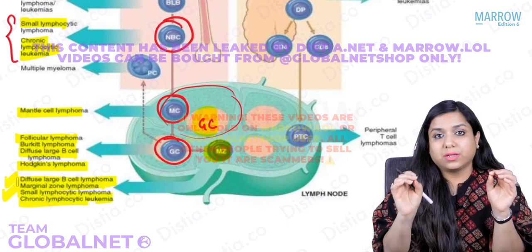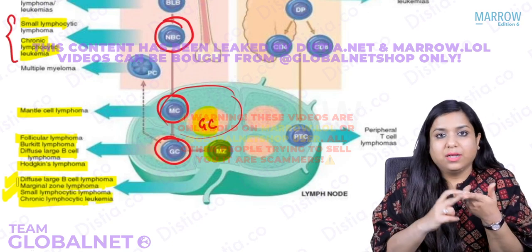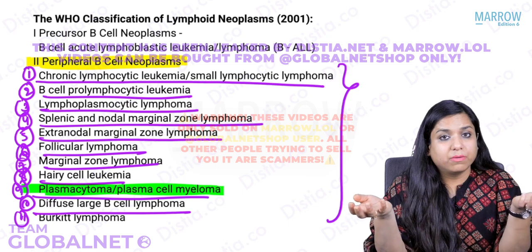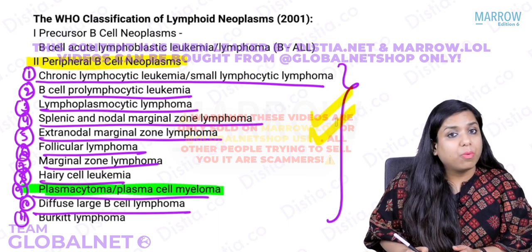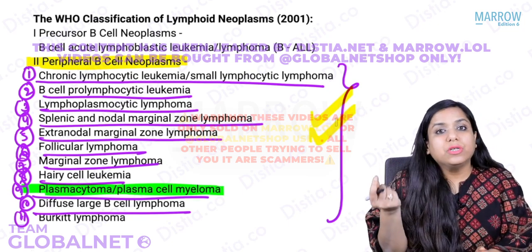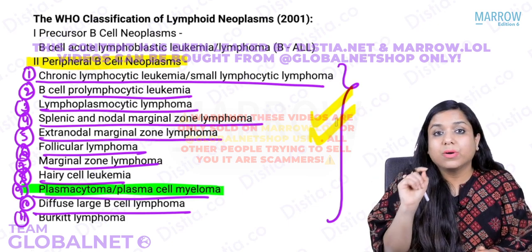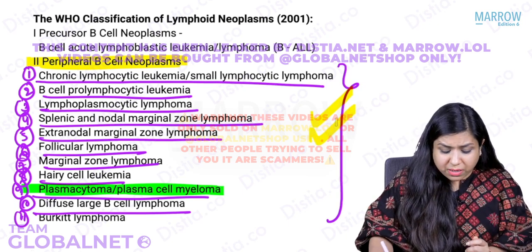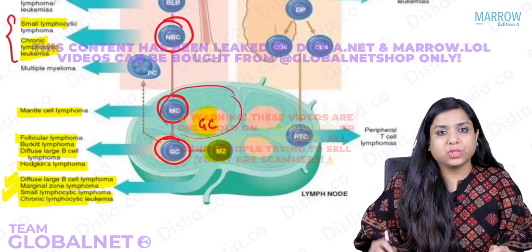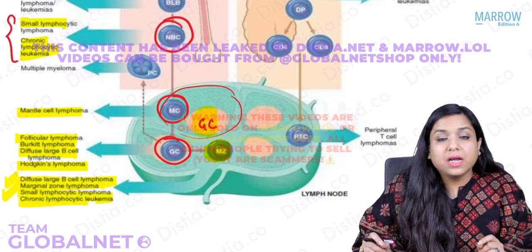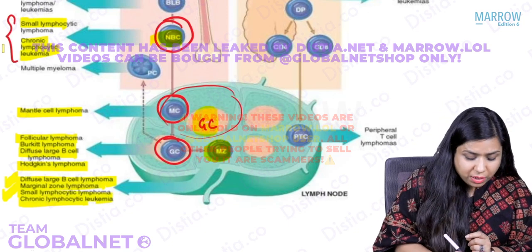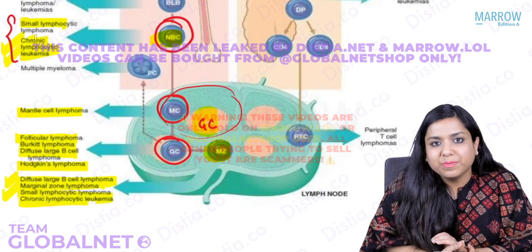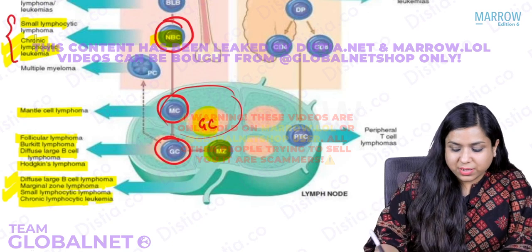This is the origin of non-Hodgkin's lymphoma — important because examiners can directly ask which is not a peripheral B cell disorder, or they can ask the origin of CLL, which was asked in 2021 as 'naive B cell.' Hairy cell leukemia and plasma cell leukemias are also B cell disorders. These basic things must be very clear.